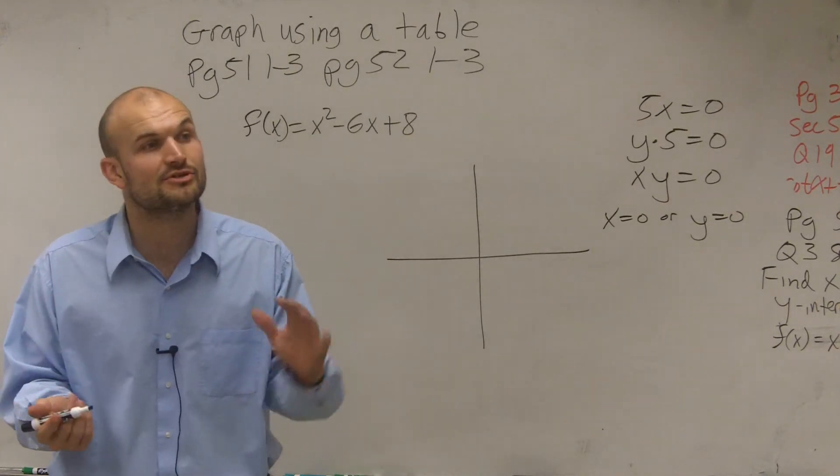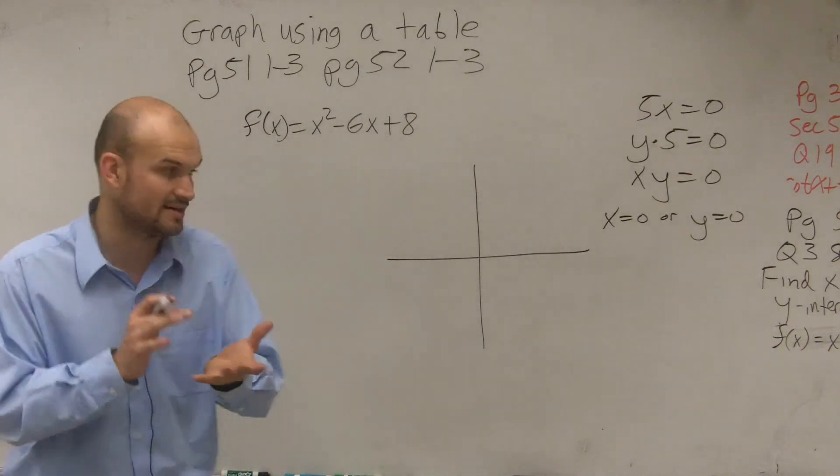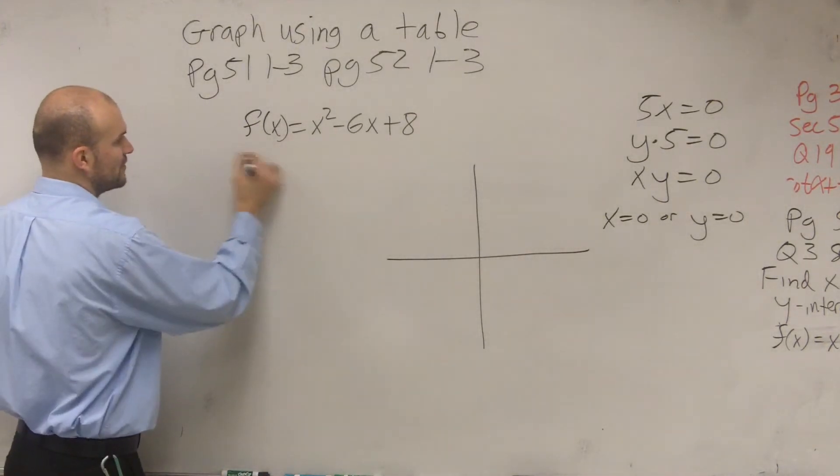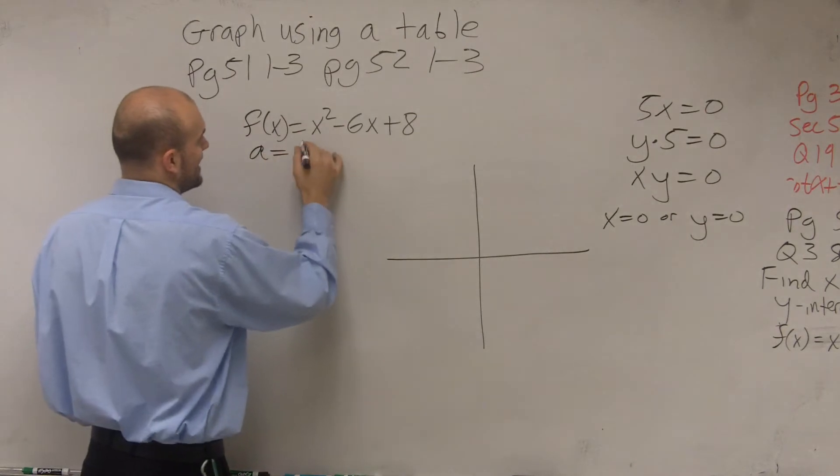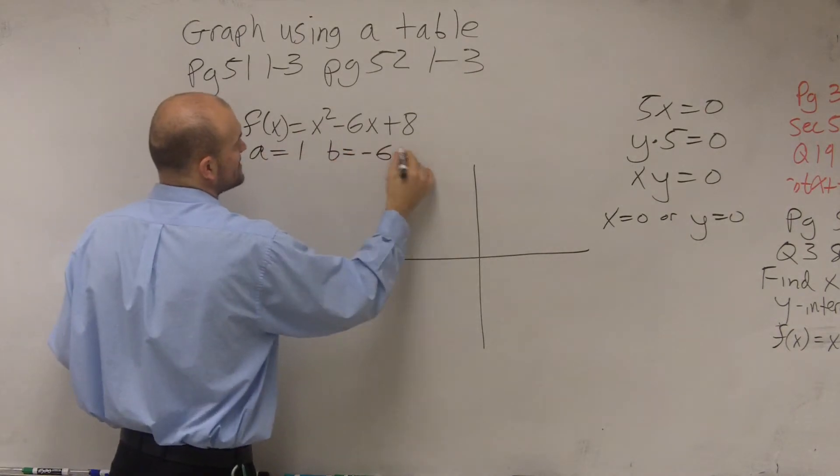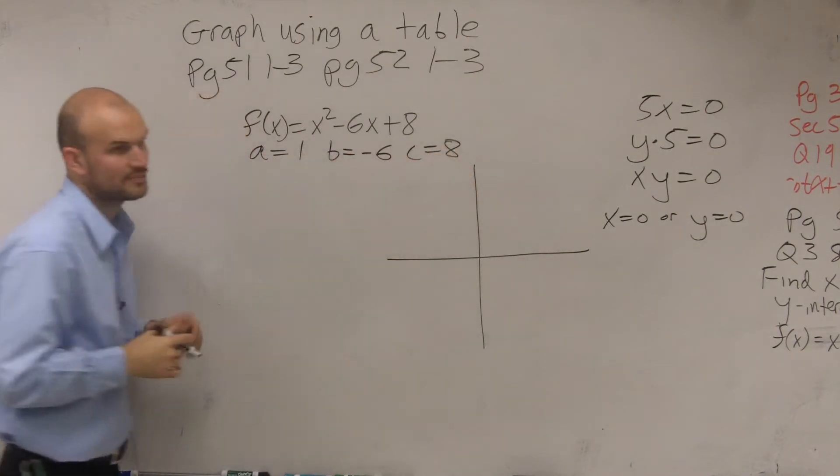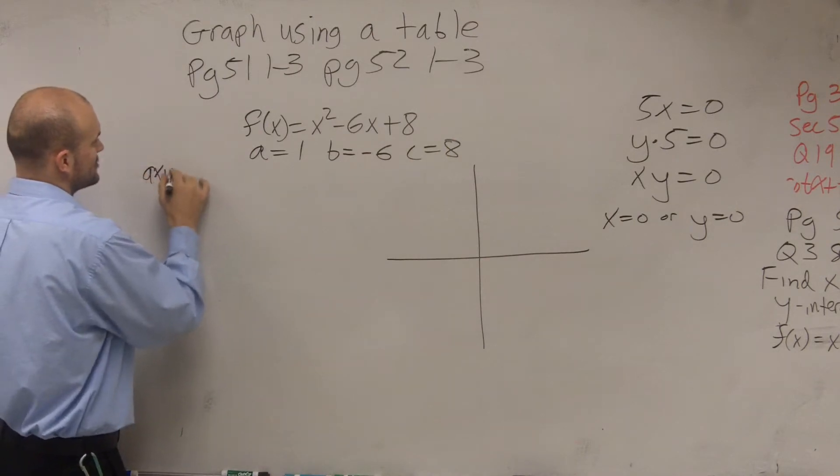When graphing using a table, the first thing we need to do is choose our main important point, our axis of symmetry. Because remember, the axis of symmetry is going to be the line that your graph is going to be reflected on. So first thing is like we did before: a equals 1, b equals negative 6, c equals 8.